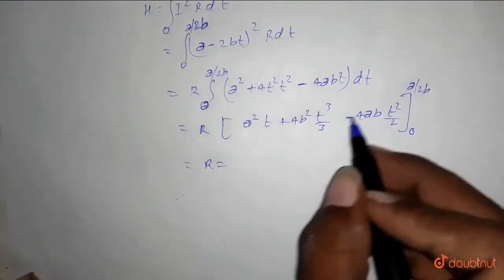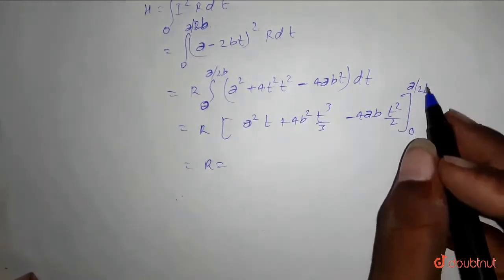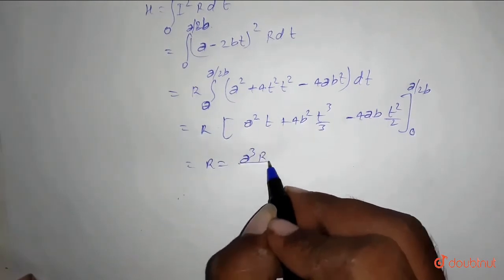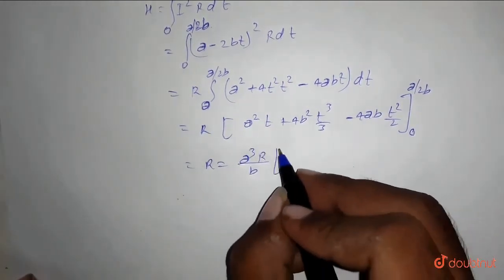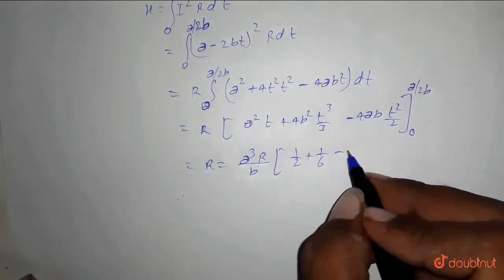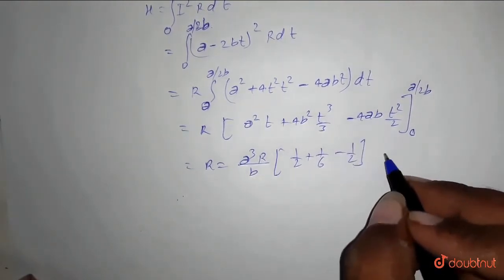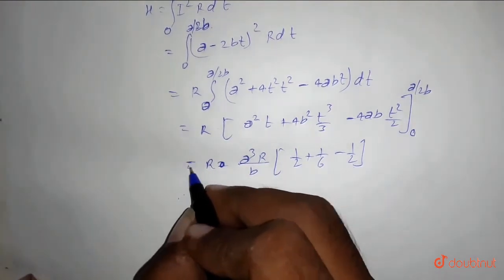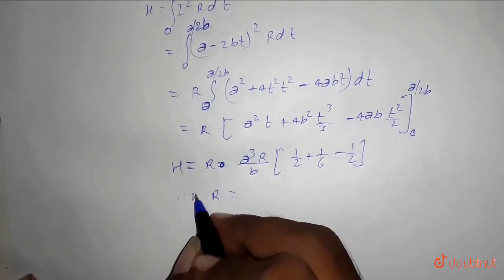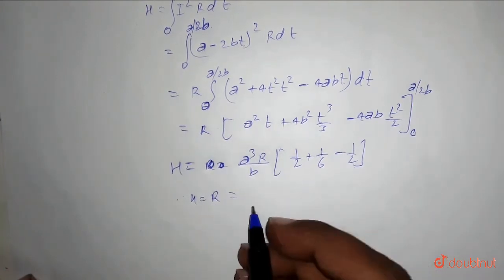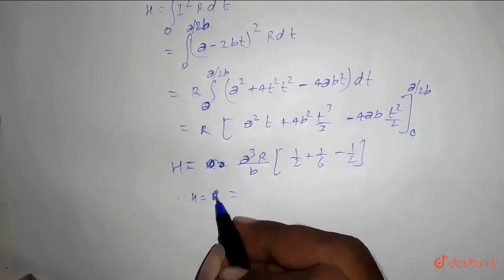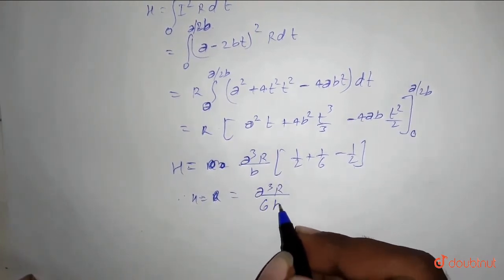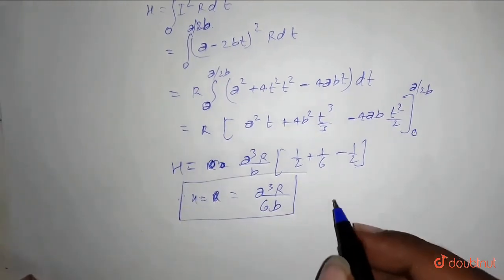So from this, if we solve this and put the value of 0 and a by 2b in this part, we will get H equals a cube R by b times 1 by 2 plus 1 by 6 minus 1 by 2. And after solving this we will get H equals a cube R by 6b. This is the total heat produced.